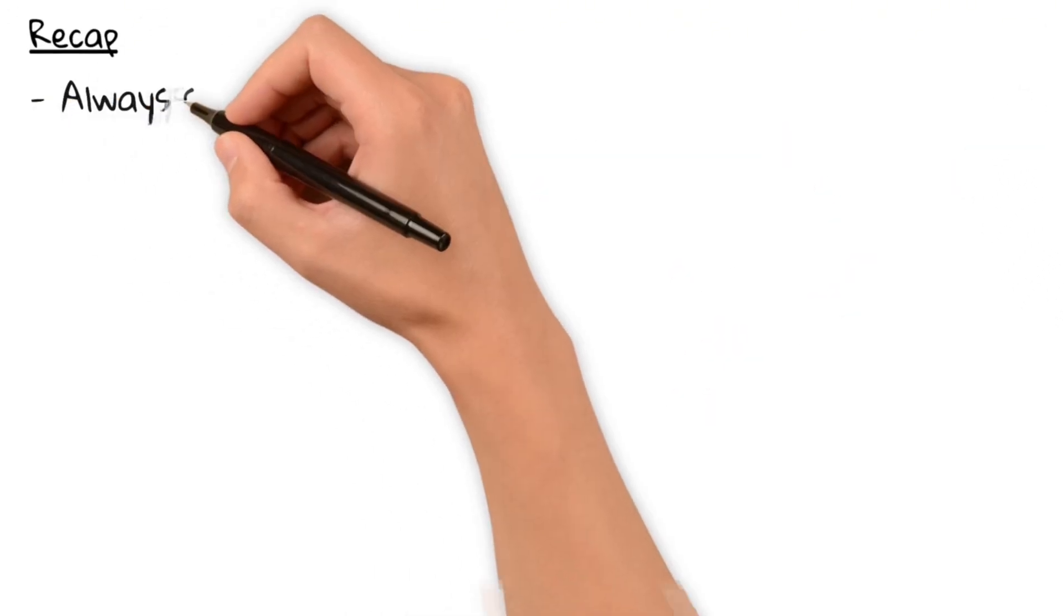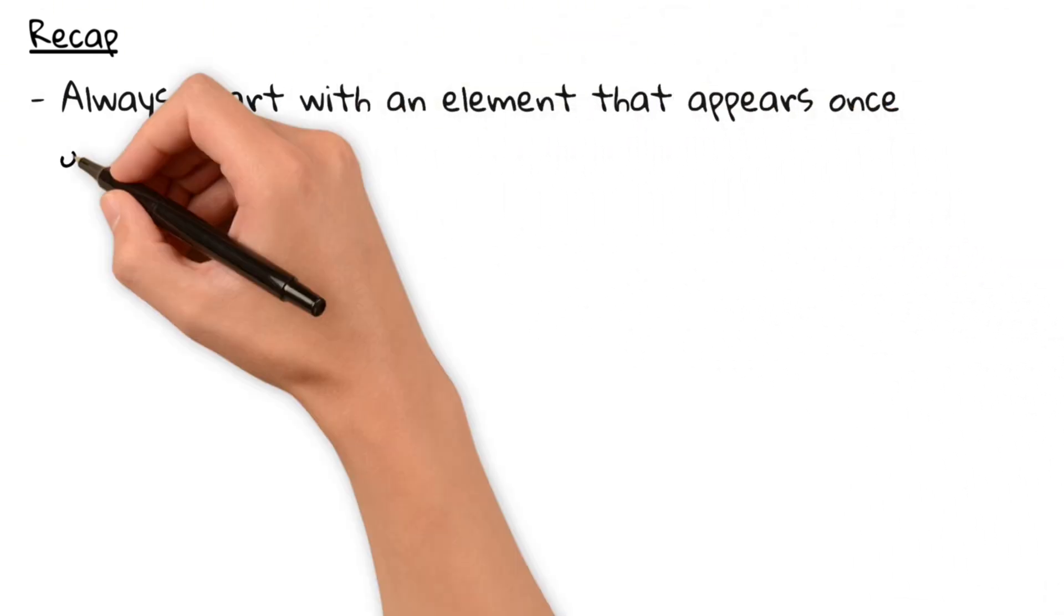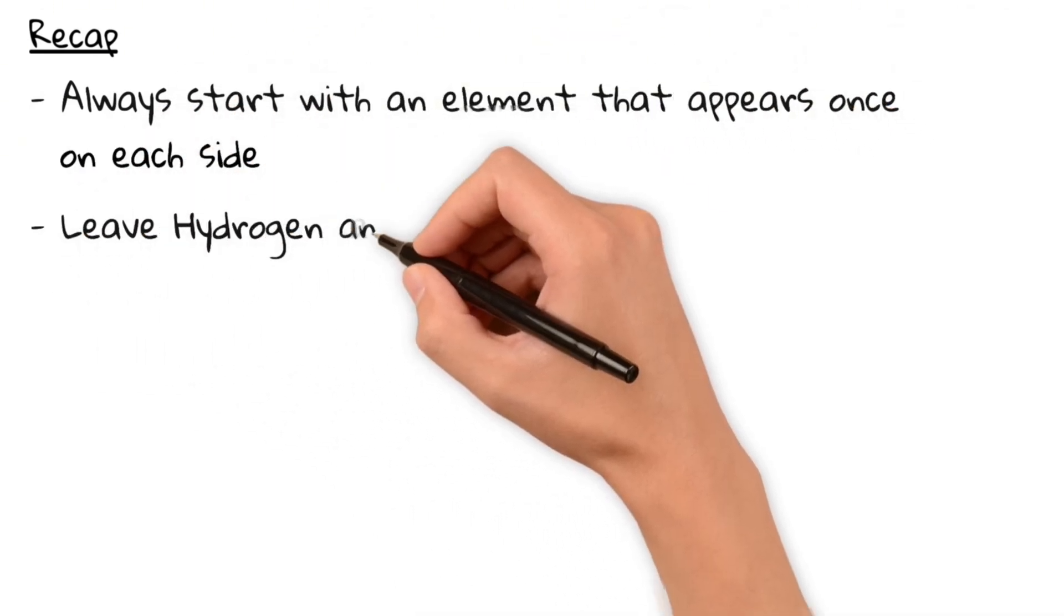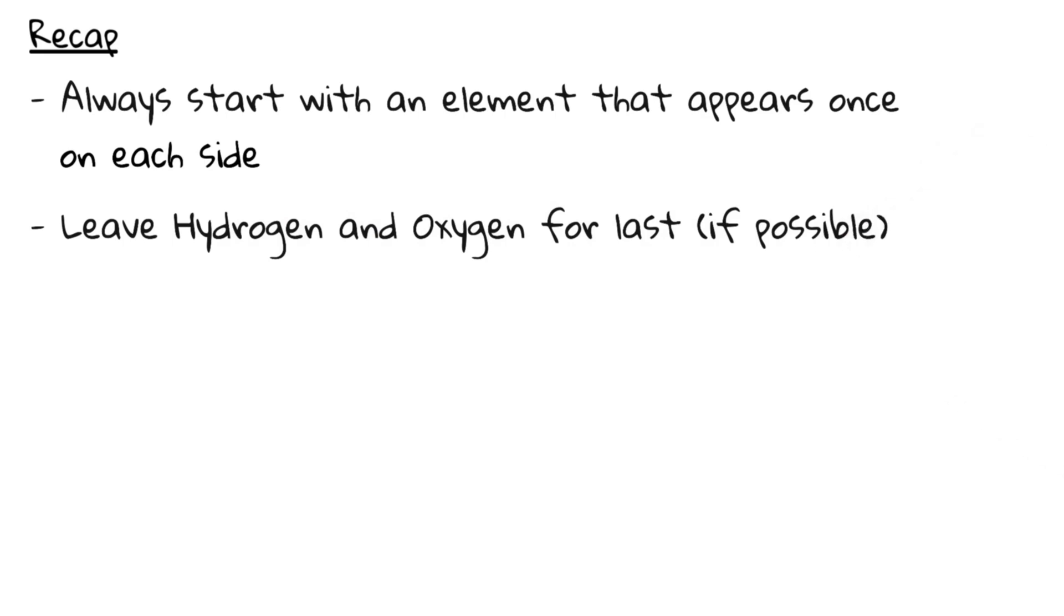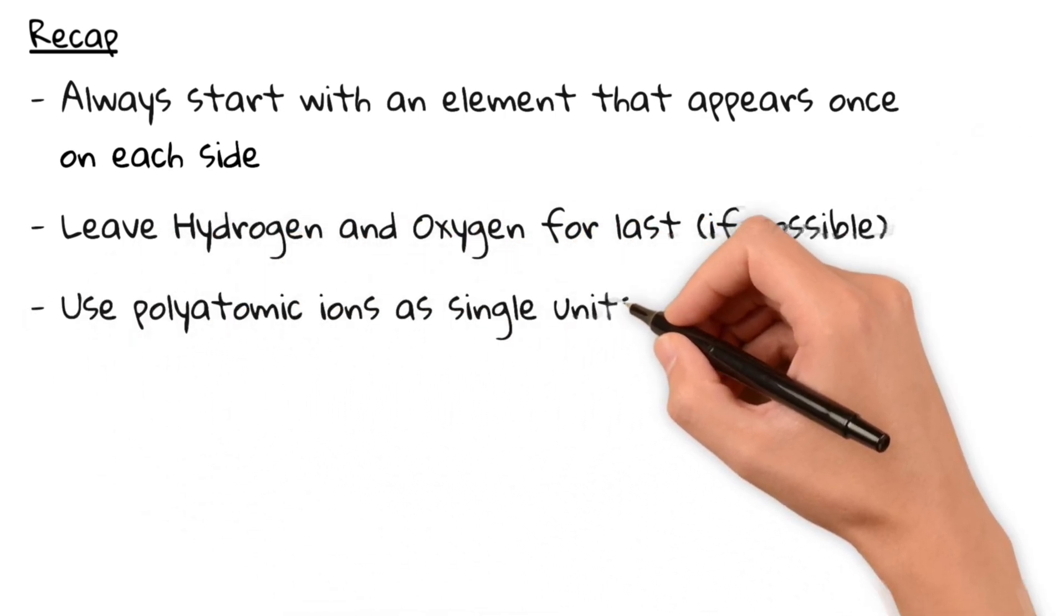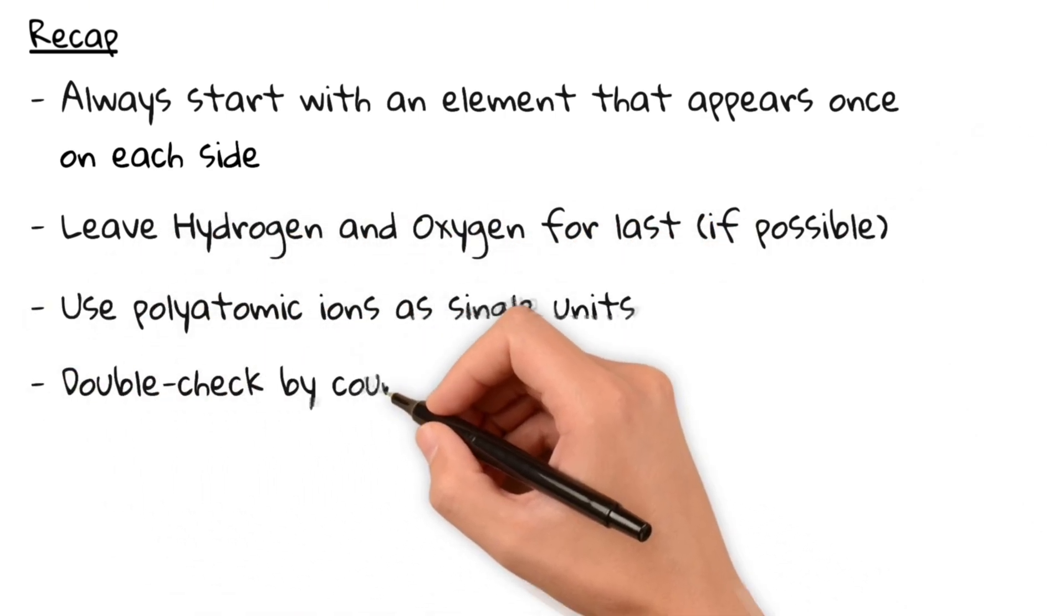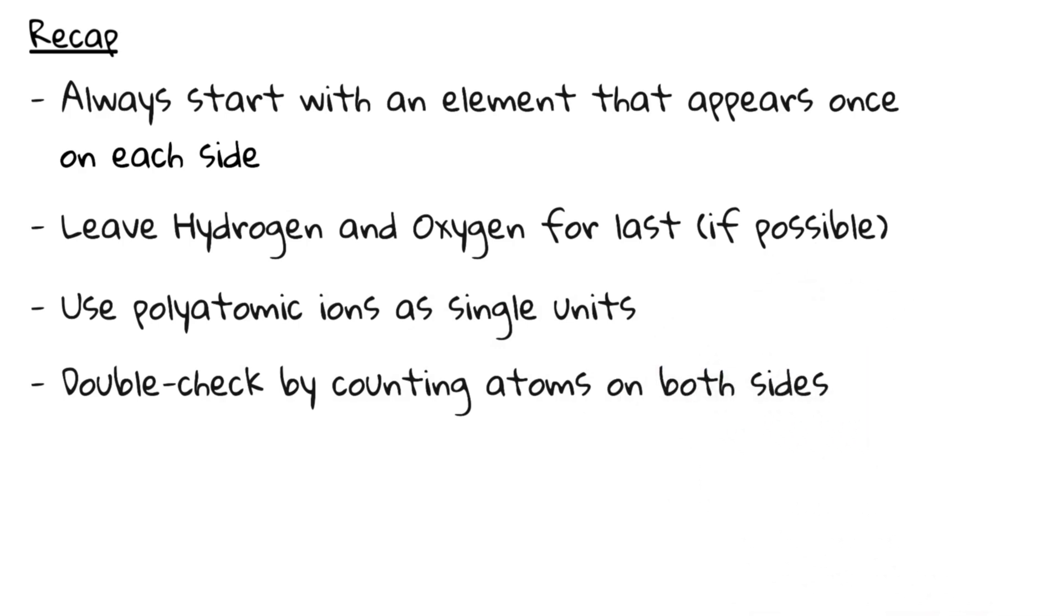So let's recap. Always start with elements that appear once on each side. Leave hydrogen and oxygen for later. Use polyatomic ions as single units where possible, and double-check by counting atoms on both sides in the end.